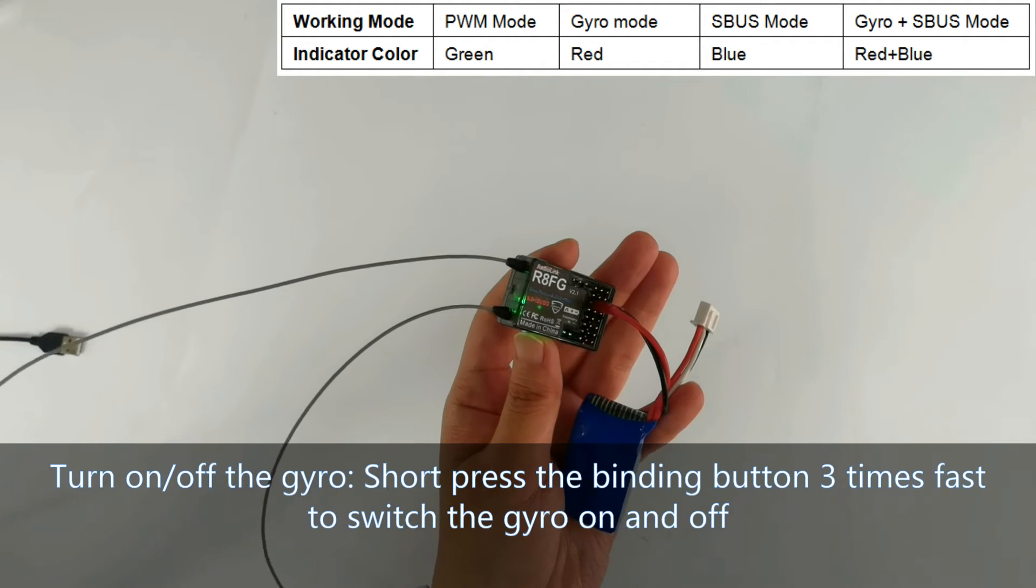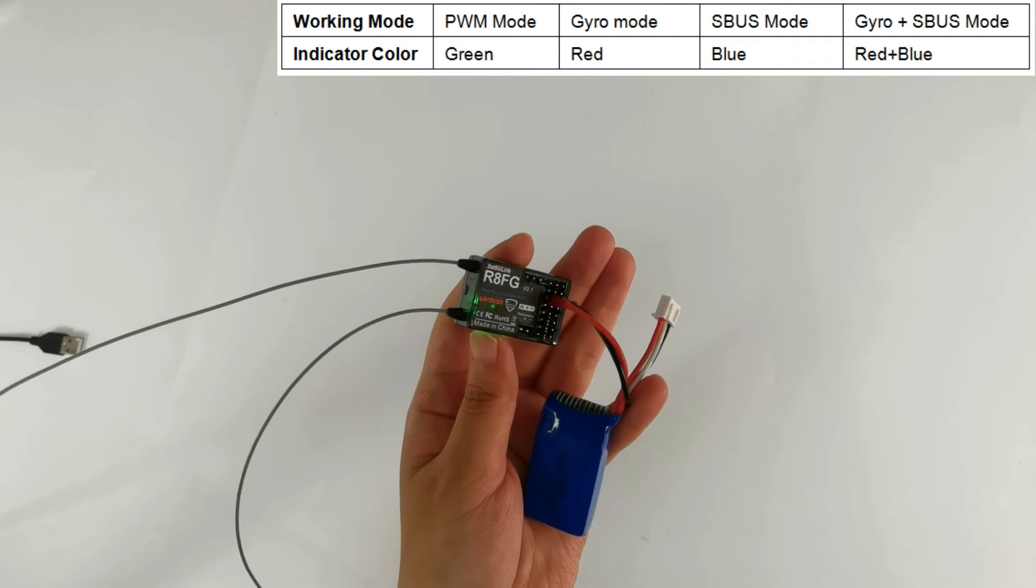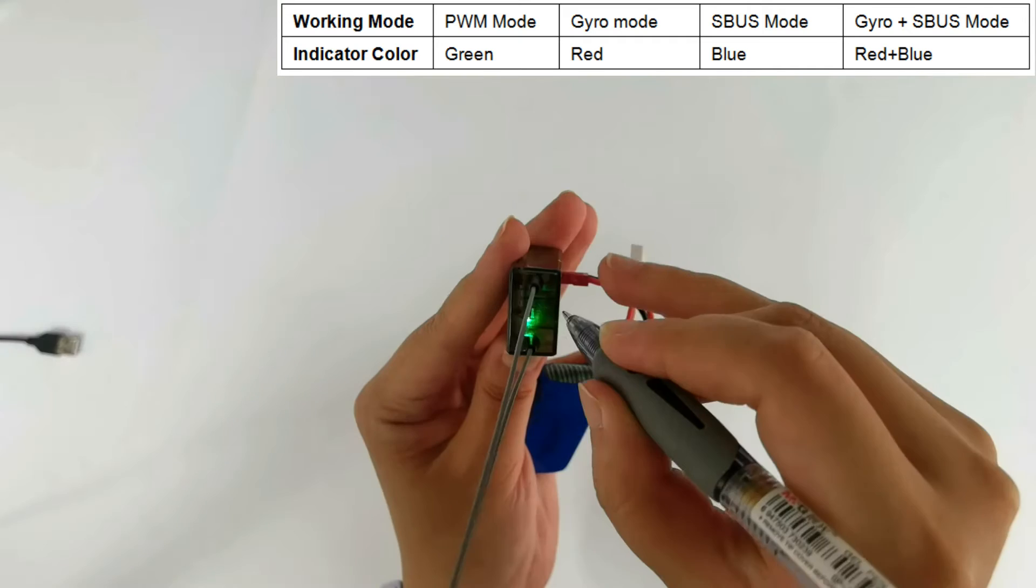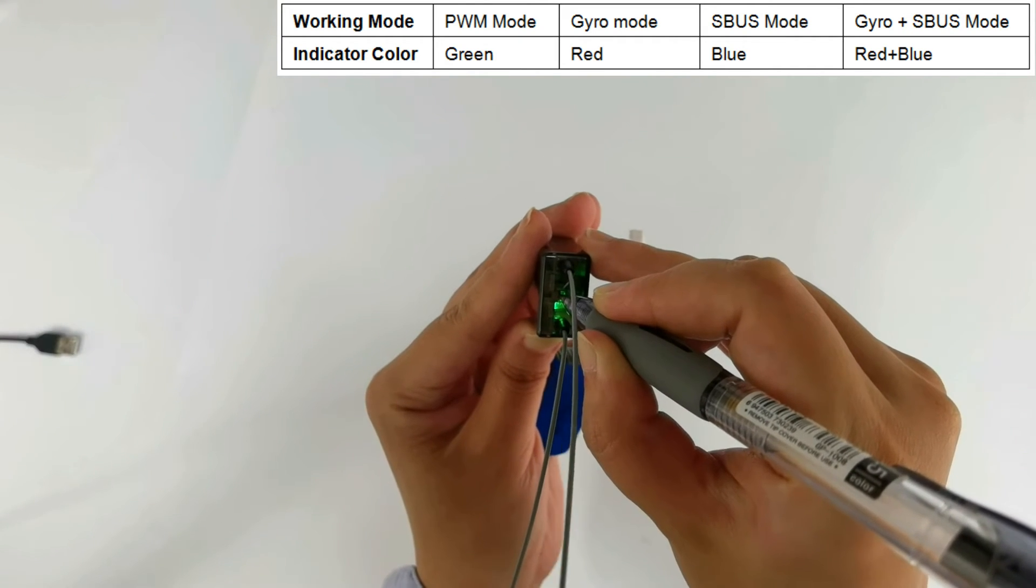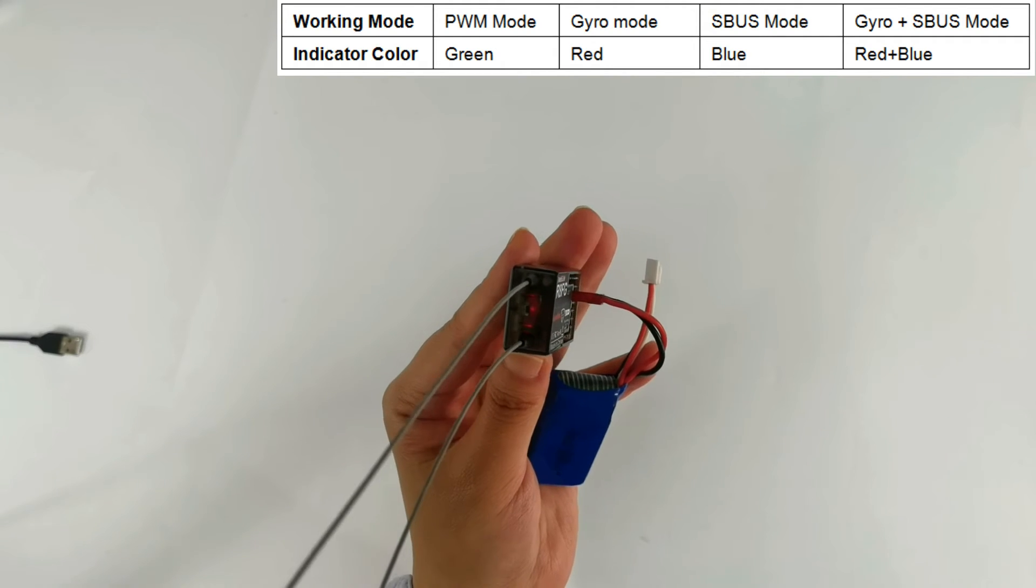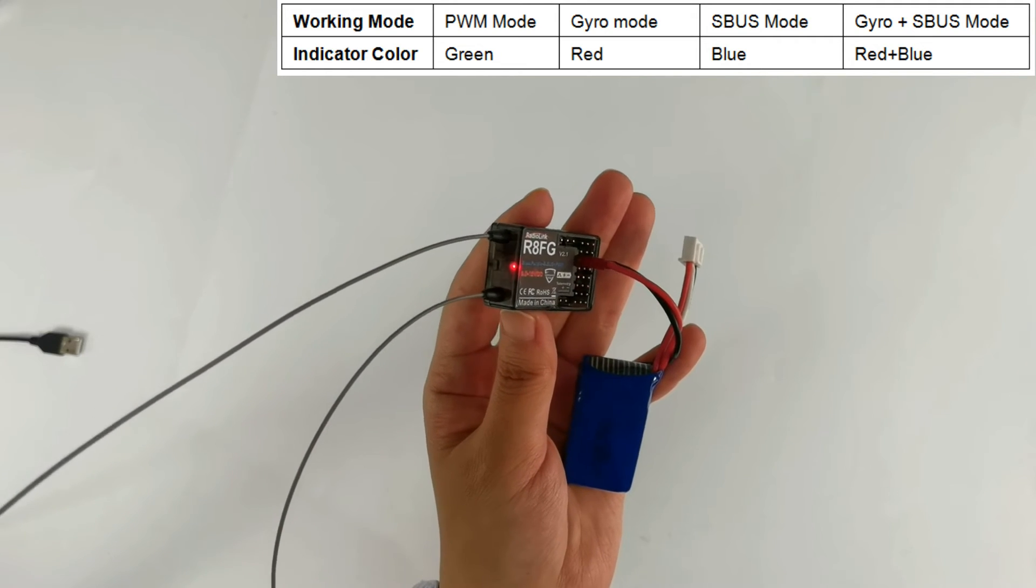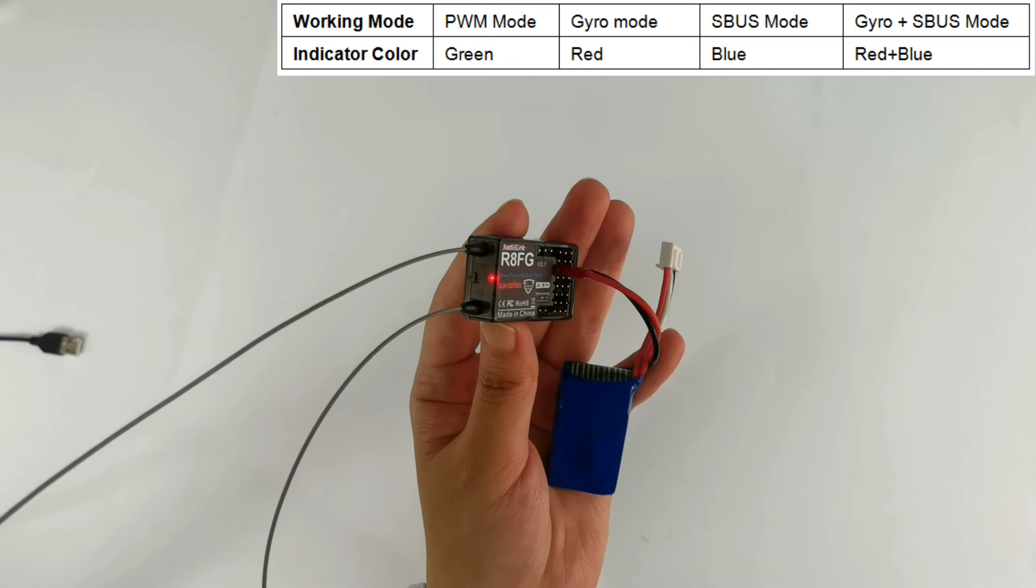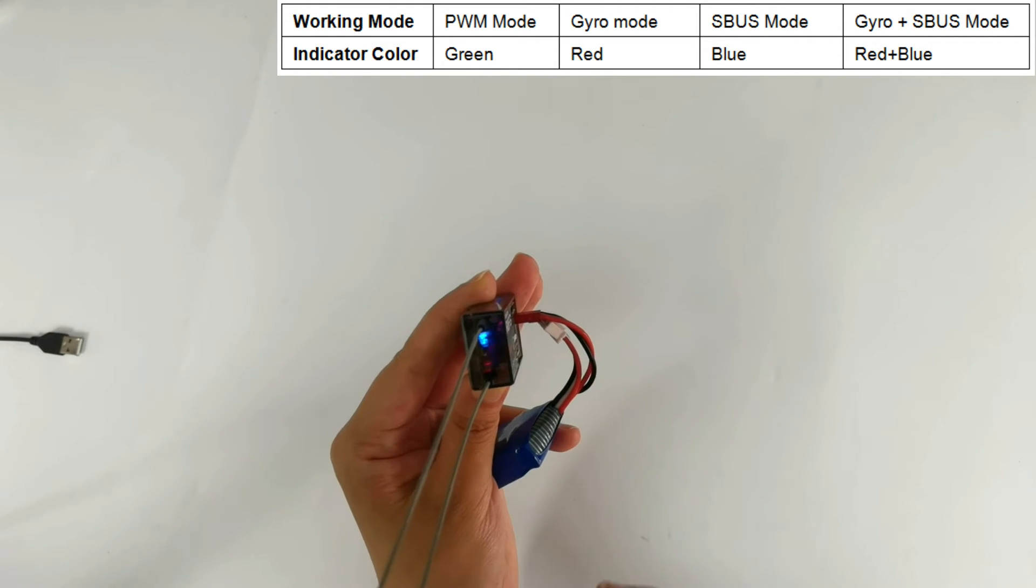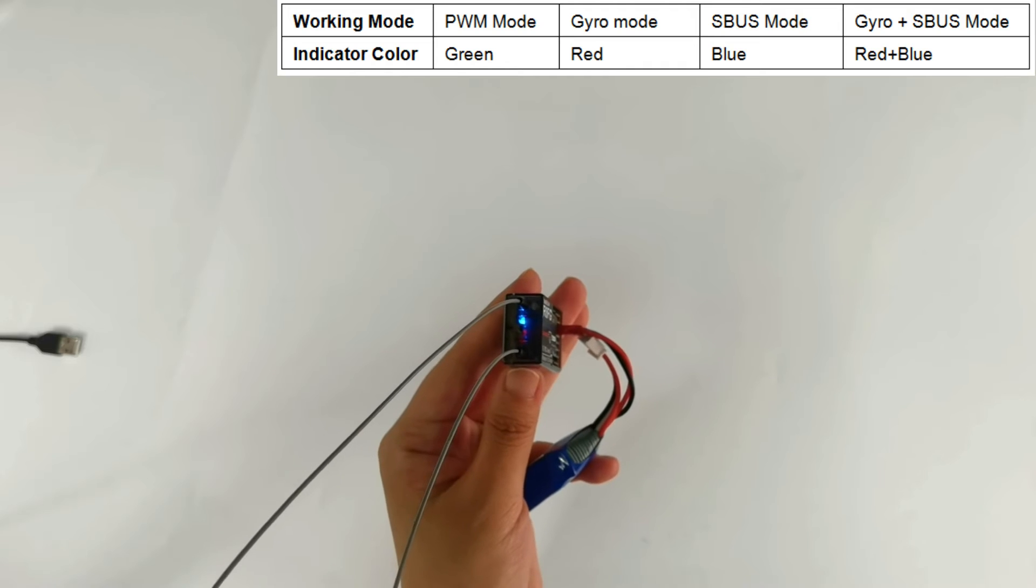Short press the binding button three times fast to switch the gyro on and off. The LED indicator is green, ordinary PWM mode. Short press the binding button three times fast to turn on the gyro. Now the color is changed from green to red, gyro mode now. If you want gyro and SBUS mode, you can press the binding button once again. So I press the binding button once again. SBUS is turned on. So it is SBUS and gyro mode, which is blue and red.